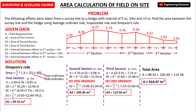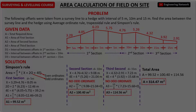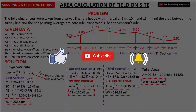So this is how we can easily calculate the area of any field in chain survey if there is more than one interval between offsets. I hope you find this video informative. Please like this video, share it with your friends, and if you are new to my channel, please click on the subscribe button and press the bell icon for more civil engineering videos. See you in the next video.